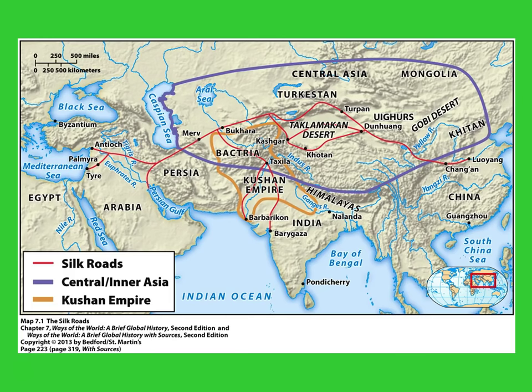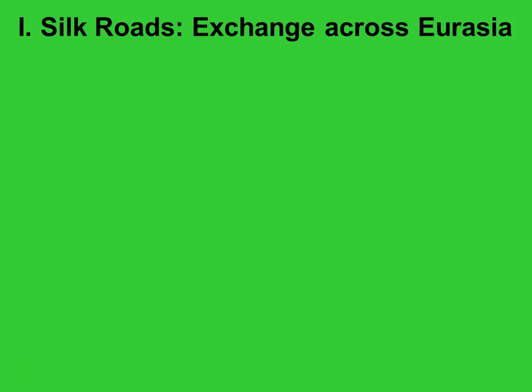In this map you can see in red the main routes of the Silk Roads. The purplish circle represents what we would typically call Central Asia — inner Asia — the area mostly dominated by pastoral nomads. Outer Asia is the area we typically think of as civilization: the Mediterranean, Persia, India, and China, all sort of being outside of that inner zone.